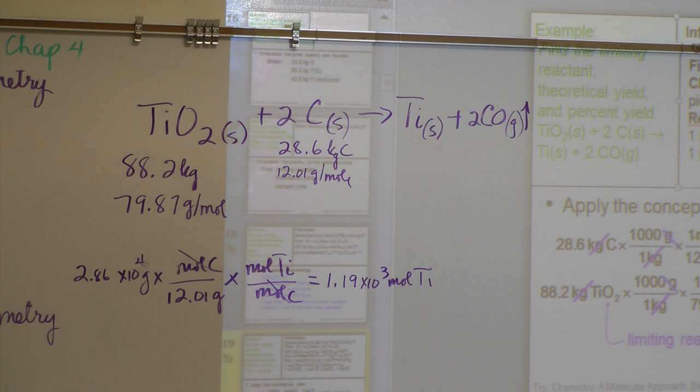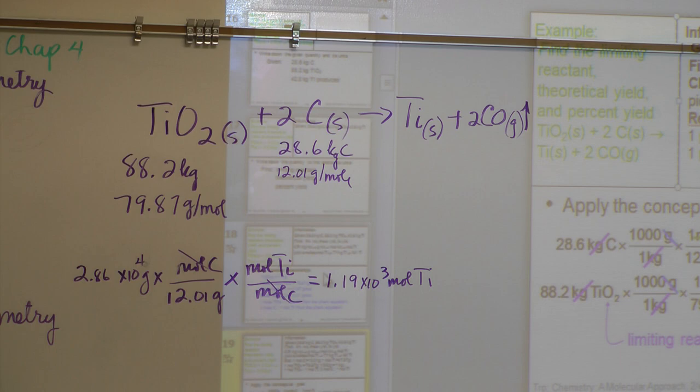A student asked: is the limiting reactant just the thing we're not going to use that disappears — like the magnesium in our last lab? No — it's important. When you manufacture something, if one reactant costs $1,000 and the other costs $2, you use the cheaper one in excess to ensure you get a certain amount of product.